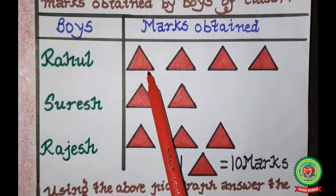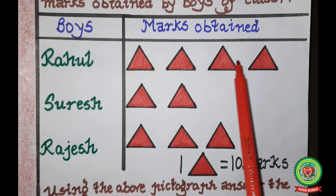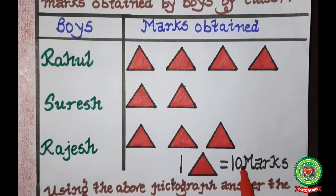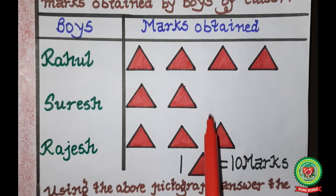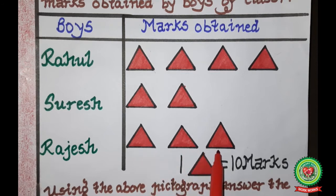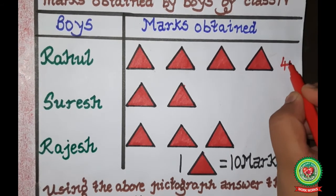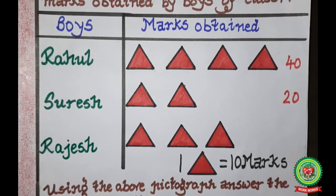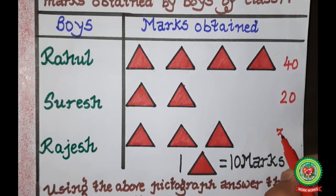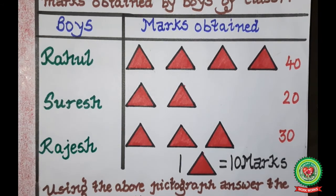Rahul has four triangles, so four multiplied by ten equals forty marks — Rahul obtained forty marks. Suresh has two triangles, so two tens are twenty marks — Suresh obtained twenty marks. Rajesh has three triangles, so three tens are thirty marks — Rajesh obtained thirty marks.